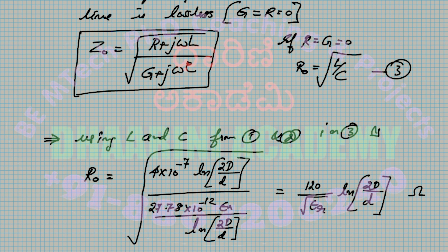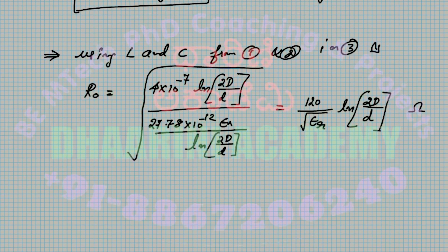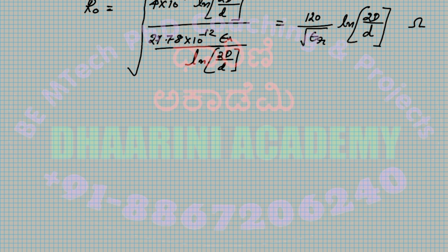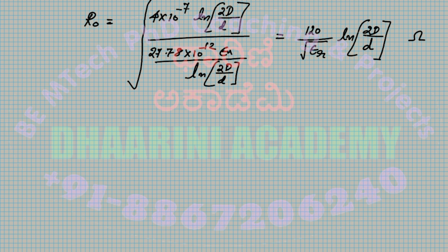Note that Z₀ (or R₀) is measured in simple ohms, not ohms per meter, since it is the ratio of voltage to current at a given point. The next important parameter is the velocity of propagation, which we have already studied in electromagnetic waves.